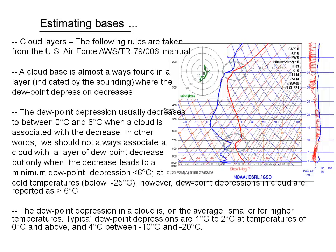Estimating cloud bases and tops from a temperature-dew point sounding may be quite simple or more difficult, depending on how well defined they are. Here are some rules of thumb developed by the Air Force. A cloud base is almost always found in a layer where the dew point depression decreases. The dew point depression usually decreases to between 0 and 6°C when a cloud is associated with that decrease. We should not always associate a cloud with a layer of dew point decrease, but only when the decrease leads to a minimum dew point depression of less than 6°C.